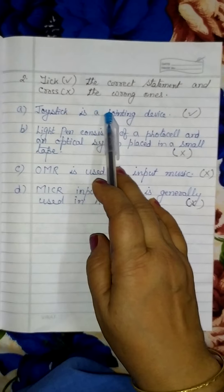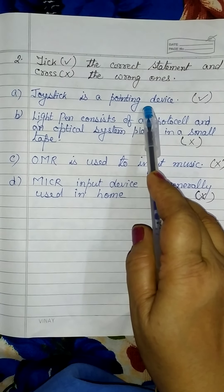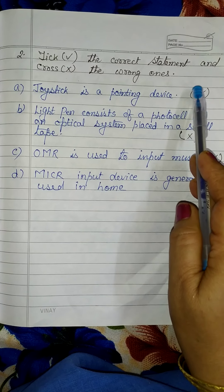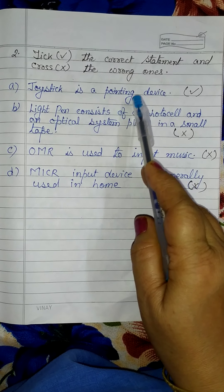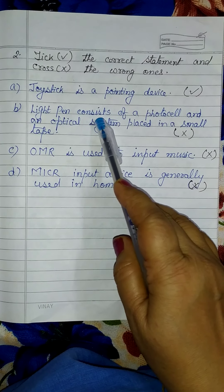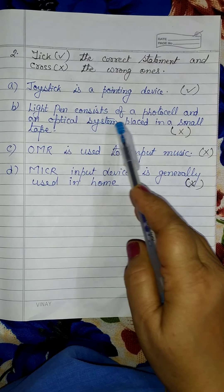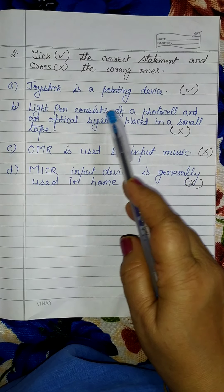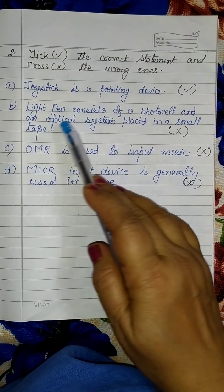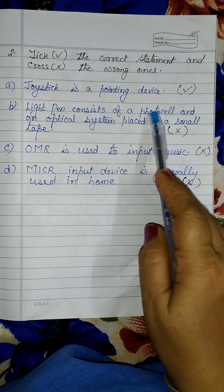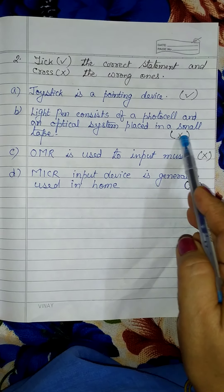Number 1: A joystick is a pointing device. Yes, it is a pointing device, so put a tick mark and write 'true.' Then leave a line. Number 2: A light pen consists of a photo cell and an optical system placed in a small tube — not tape. So this is false.